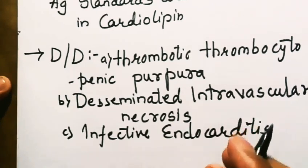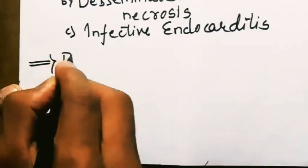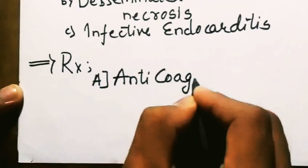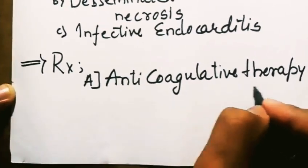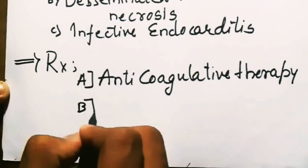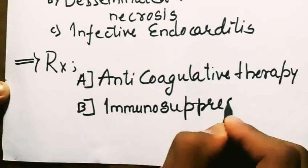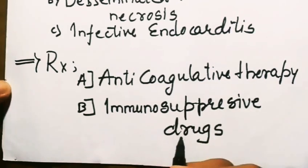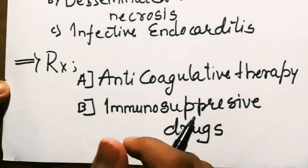Going to treatment of this disease, it is mainly by anticoagulatory therapy, or in association with immunosuppressive drugs. Basically, this is an acquired autoimmune disease which is not so prevalent in some countries but is a major concern disease.